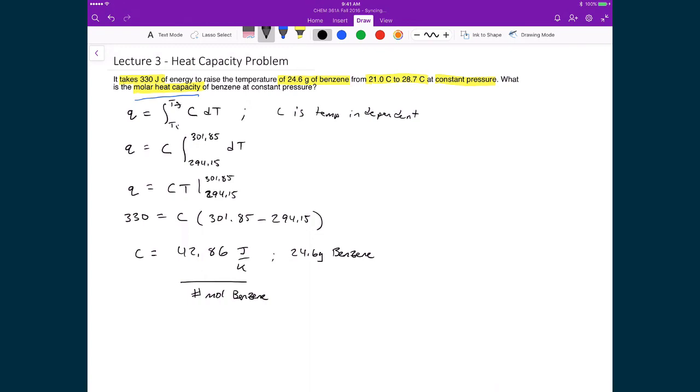So, first, then, we have to find out the number of moles of benzene. And so, that means we're just going to do a quick conversion, where I've got 24.6 grams of benzene, and I'm going to multiply that by 1 mole of benzene divided by the molar mass, 78.11 grams. And so, what I have is 0.315 moles.